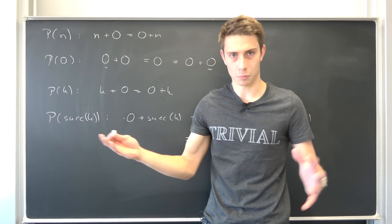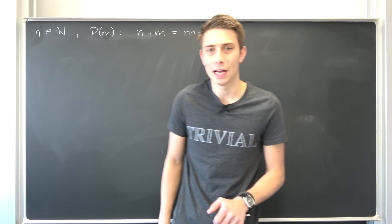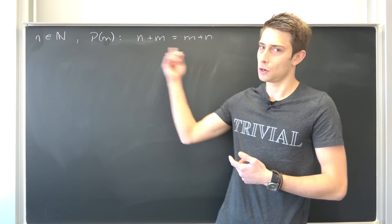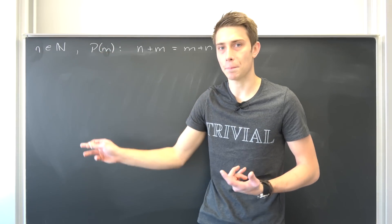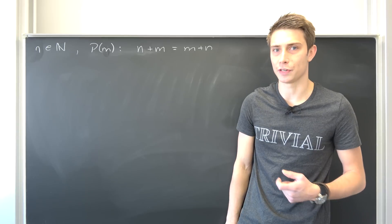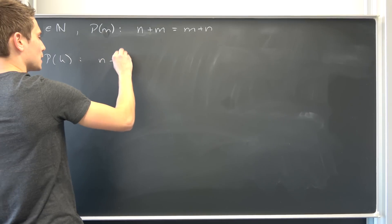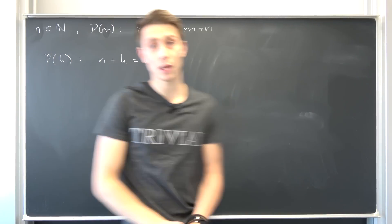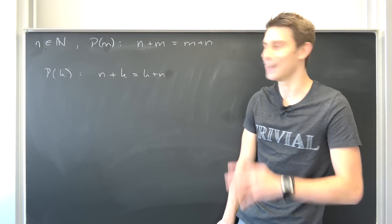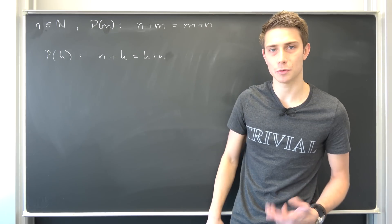We have laid the groundwork — associativity and the commuting property of zero. So our base step P(0) is completely clear from the previous lemma we derived: zero commutes with everything. Now we introduce P(k) for some arbitrary fixed natural number k, which states: n + k = k + n for some fixed natural number n. We want to show this ensures P(succ(k)).